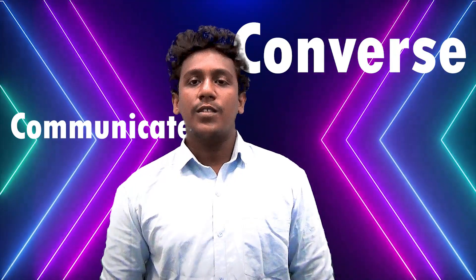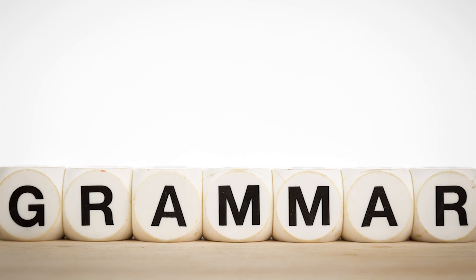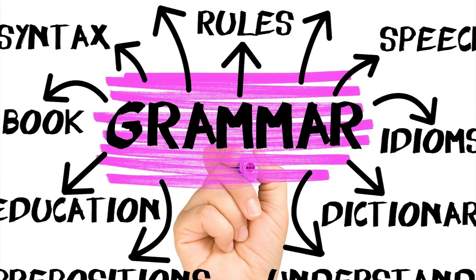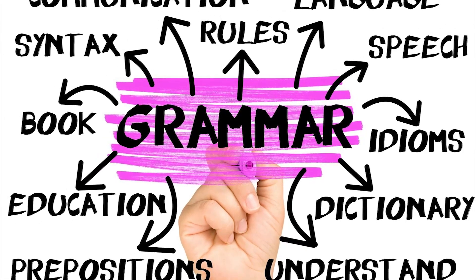The purpose of learning a language or grammar is to communicate or to convey something to the receiver. In such a way, the purpose of learning grammar is the language that makes it possible for us to talk about language. The method of teaching or learning English can be classified into two types.